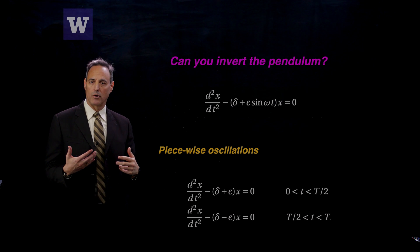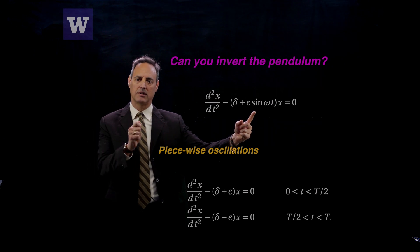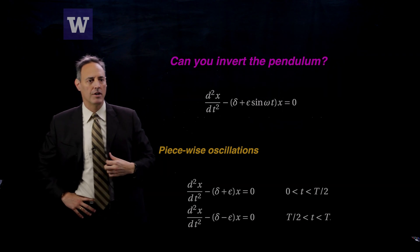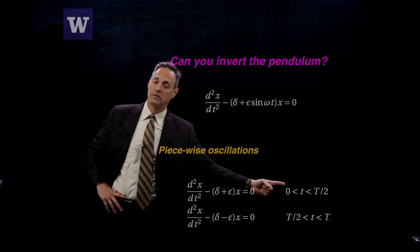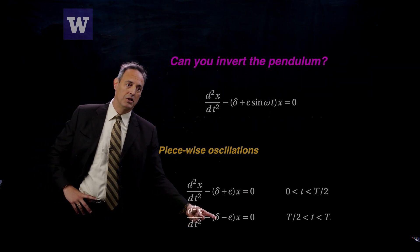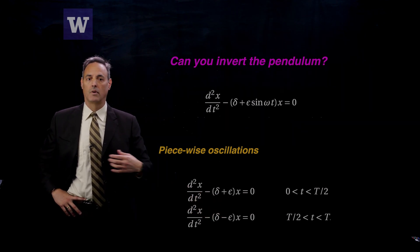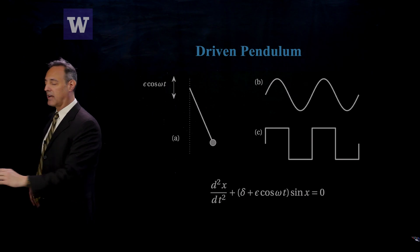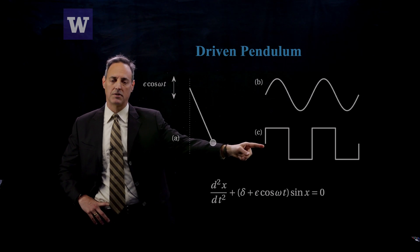So what I'm going to do is break this up into two components. Remember, I'm going to assume that this thing here is going to be piecewise. So it's going to be plus and then minus and then plus and then minus. I'm going to approximate that sine by two constant pieces. So here it is. Piecewise oscillations are like this. Here's the governing equations from 0 to half the period, t over 2, and here's the governing equations from t over 2 to t. The big difference here is the sign. So it's plus epsilon minus epsilon. That's the only difference between the two.